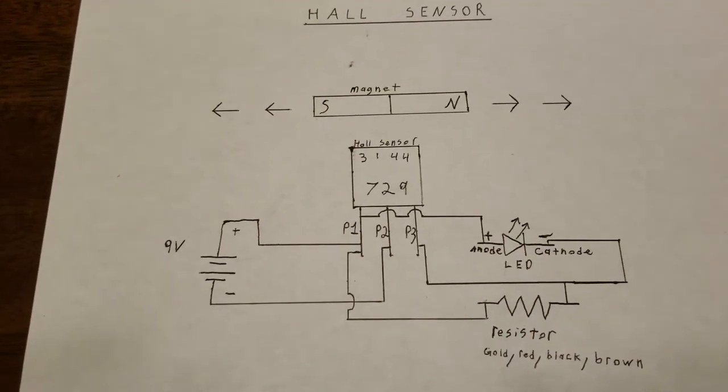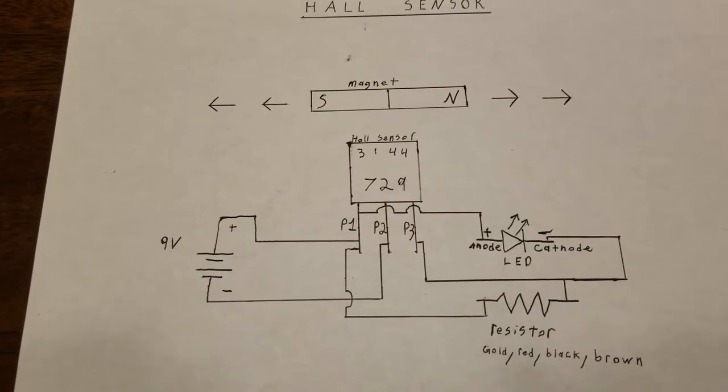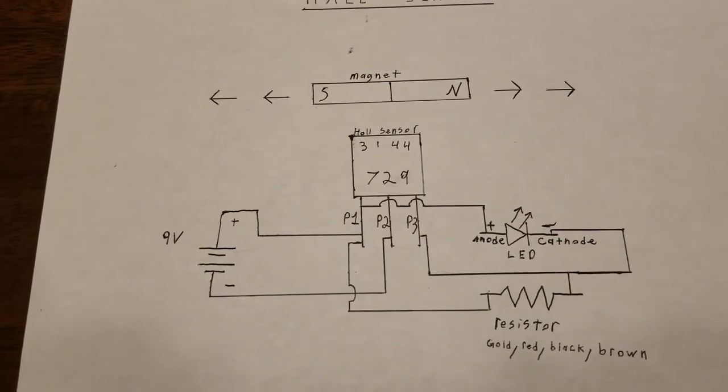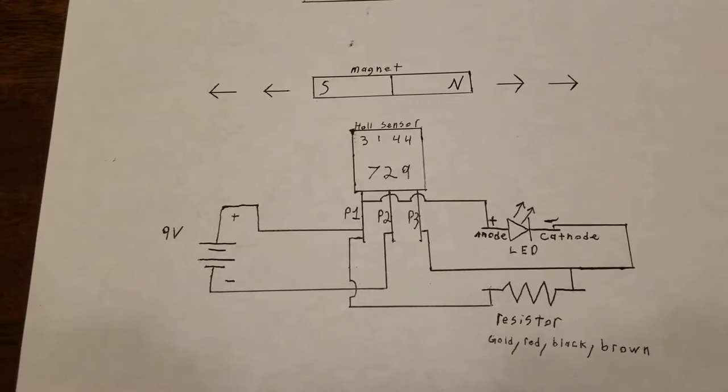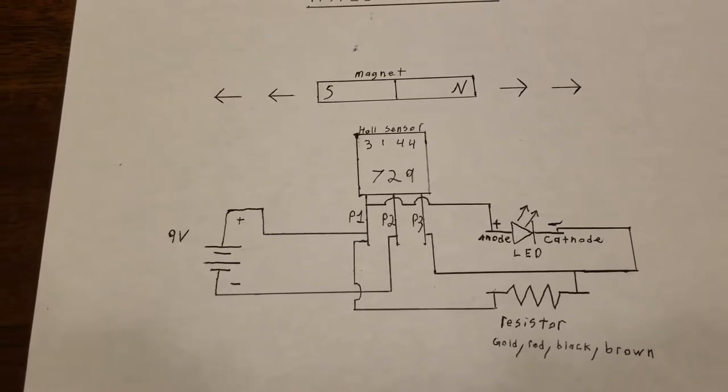A Hall sensor is basically an on and off switch. When a magnetic field crosses it, it tells the switch to turn on, and when the magnetic field is past it, it tells it to turn off.